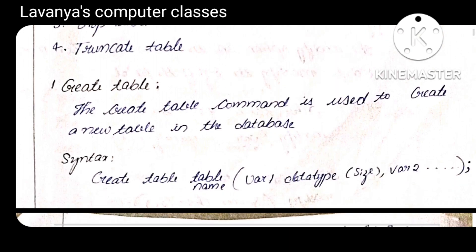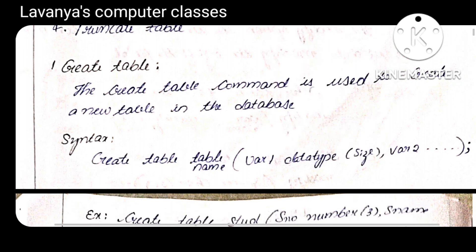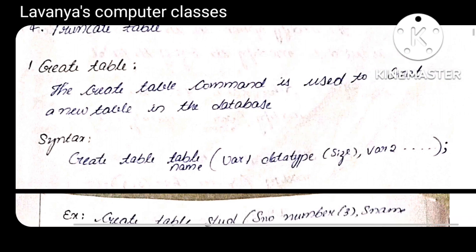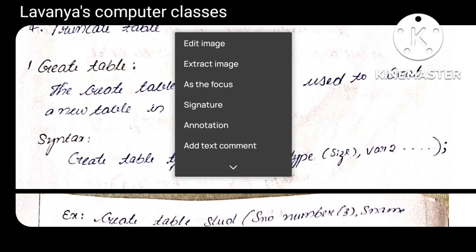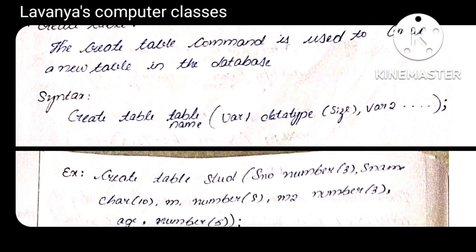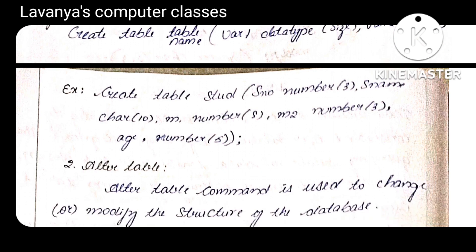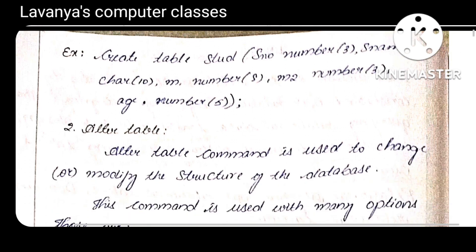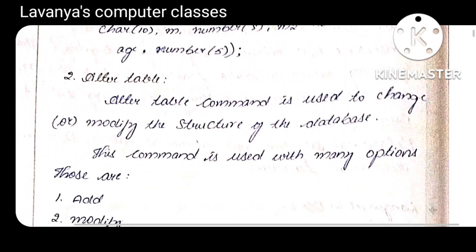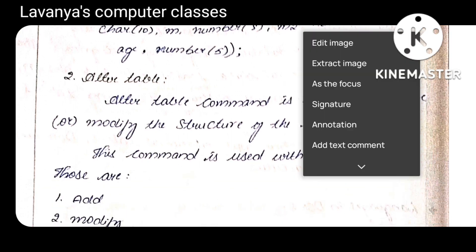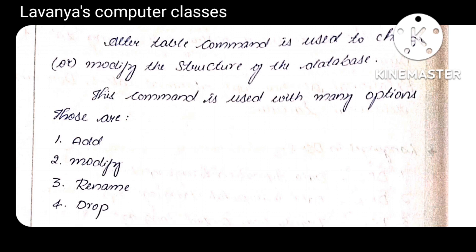The first one is CREATE TABLE. The CREATE TABLE command is used to create a table. The syntax is: CREATE TABLE table_name (variable1 datatype(size), variable2 datatype(size)). Example: CREATE TABLE student (serial_number NUMBER(10), student_name CHAR(10), m1 ...). Like this we can create the table.